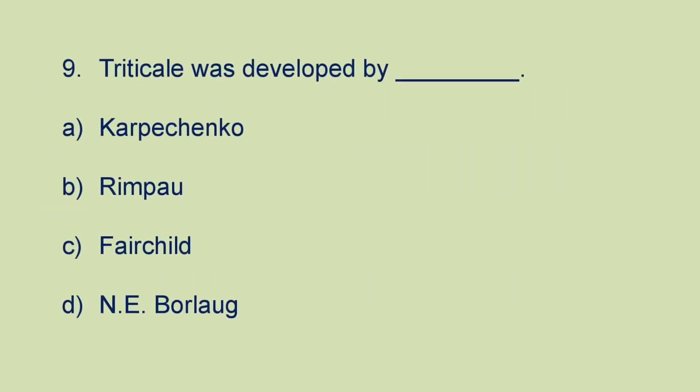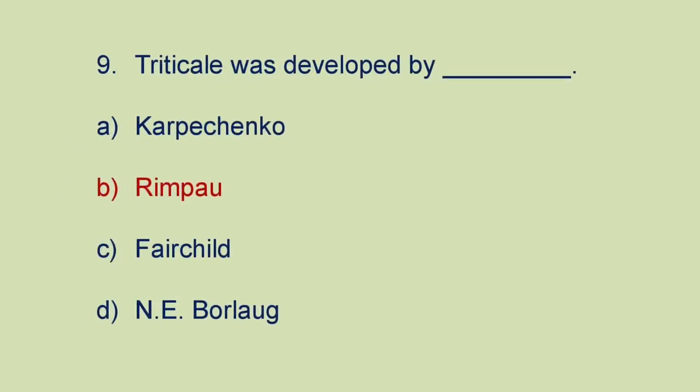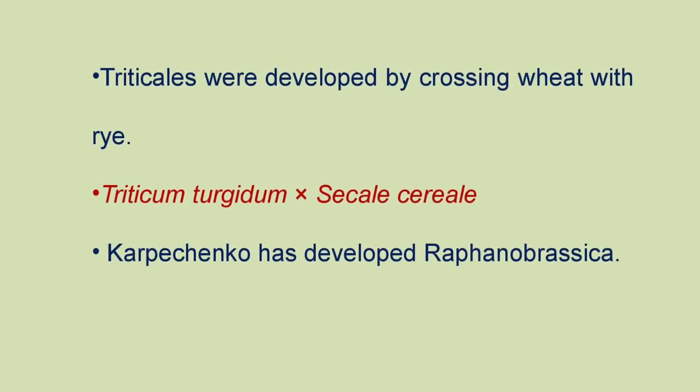Next question: triticale was developed by A) Karpachenko, B) Rimpau, C) Fairchild, or D) Annie Borlaug. The answer is it was developed by Rimpau. Triticale was developed by crossing wheat with rye — Triticum turgidum cross Secale cereale. Karpachenko developed Raphanobrassica.